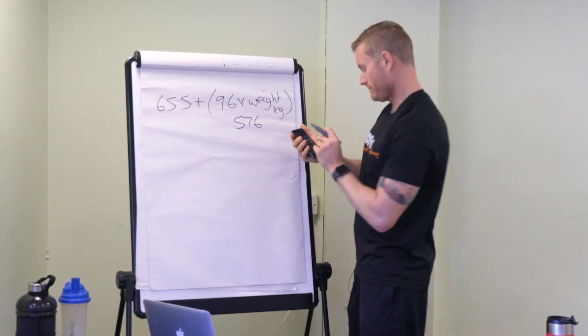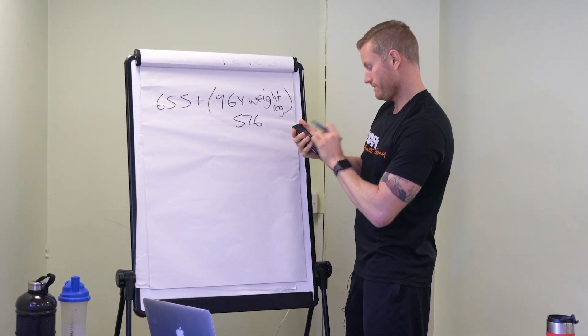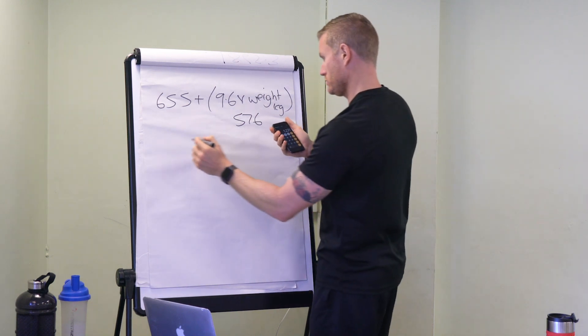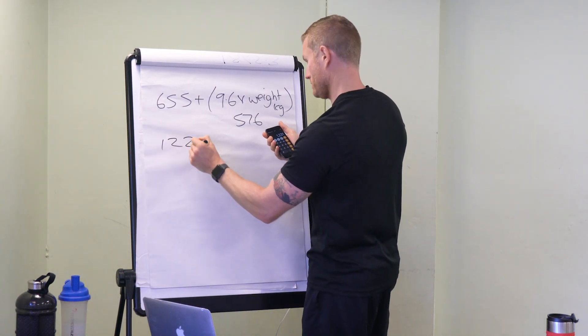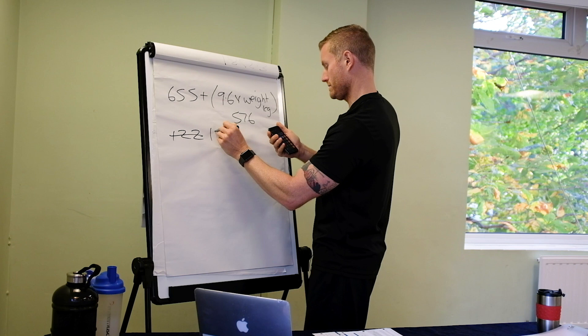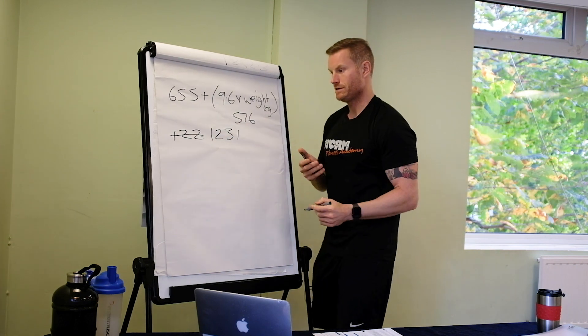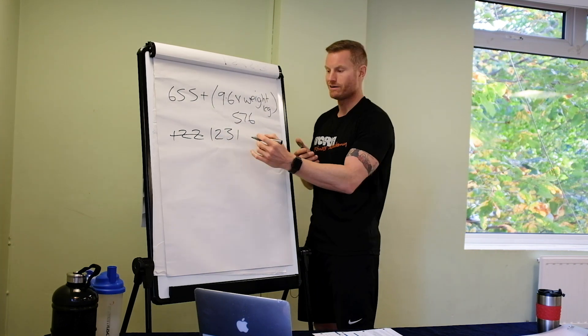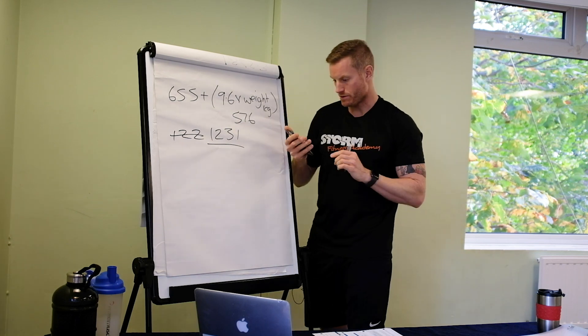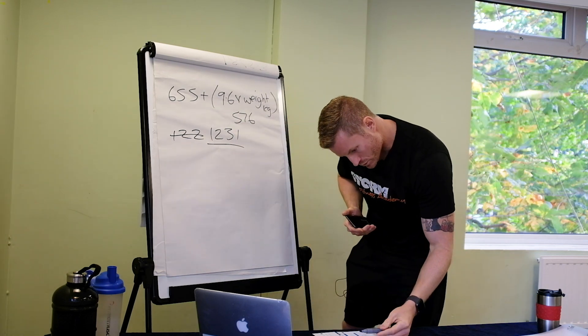So 9.6 times 60 equals 576. Let's add that on, plus the 655 equals 1,231. A bit dramatic today, I don't know why. 1,231. It's all that talk of Jennifer Lawrence.